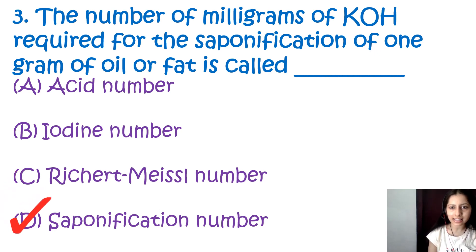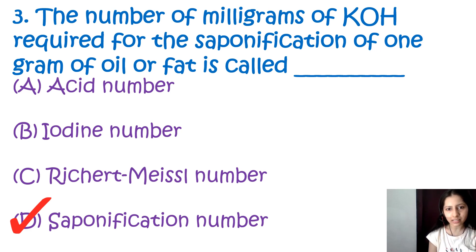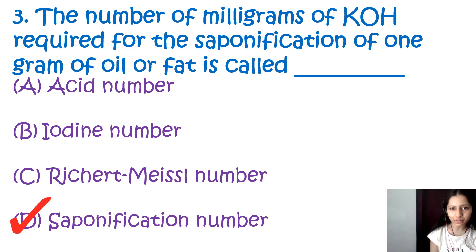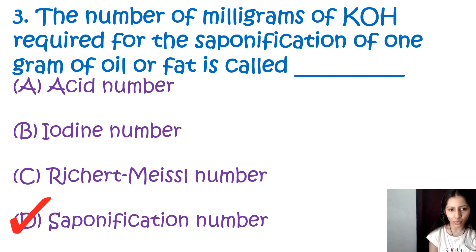The acid number measures the amount of free fatty acids present in a substance. The iodine number measures the degree of unsaturation in a substance based on its ability to react with iodine. The Reichert-Meissl number is the volume of 0.1 molar solution required for the neutralization of fatty acid in 5 grams of fat. The correct answer is D, saponification number.